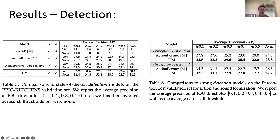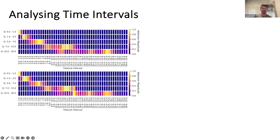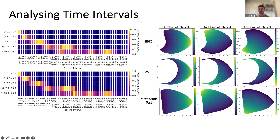Analyzing the time intervals: this is an attention heatmap of the second layer of the transformer encoder. The y-axis shows different time interval queries and the bottom shows the overlapping input features. Based on the query being fed in, the model attends to features within that time interval query — for a 10-to-26-second action, attention mainly goes to features between 10 to 26 seconds. We show this is consistent across different input windows.